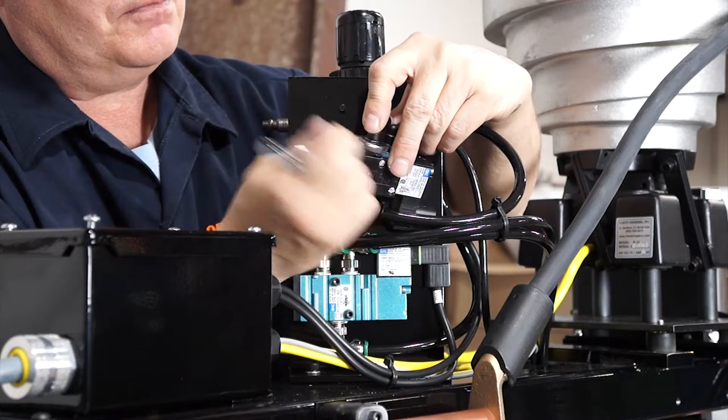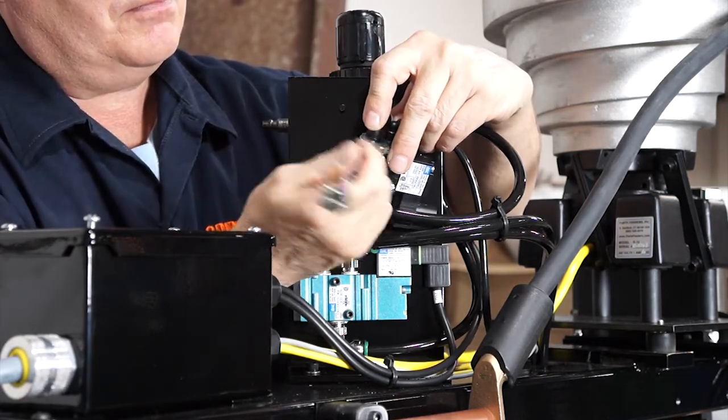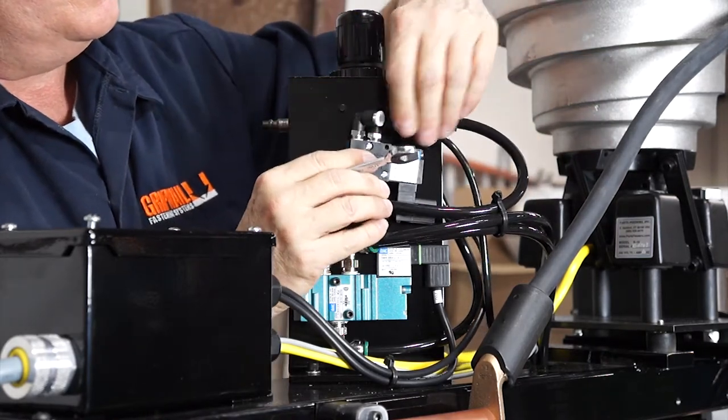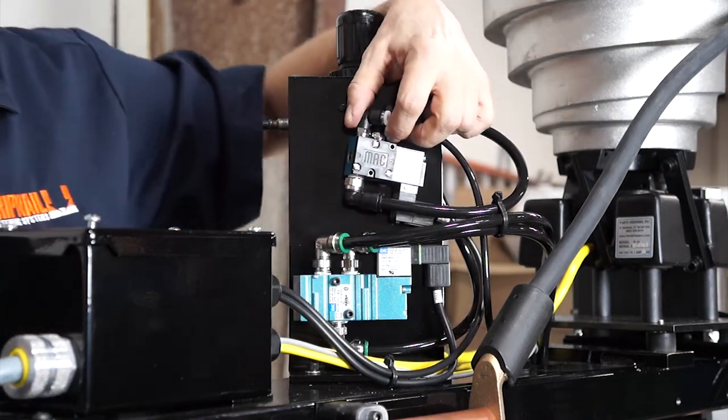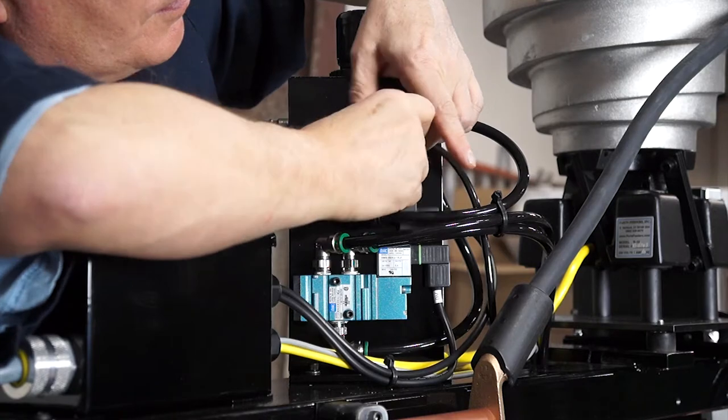Now we can take the air fitting elbow and attach that to the port of the load valve. These fittings come with air sealant already on them. Orientate the air fitting so it is pointing out. Now the load valve can be reattached to the bracket.